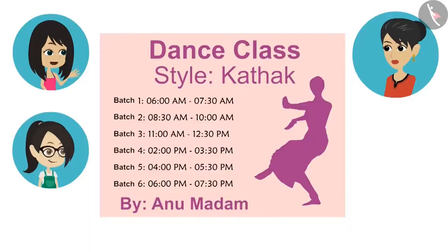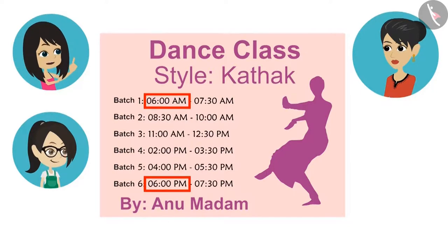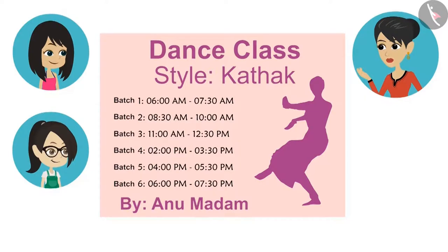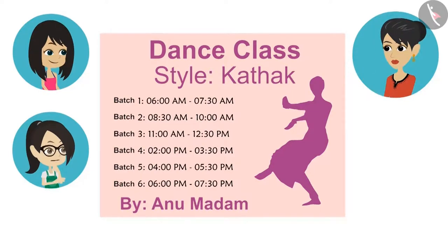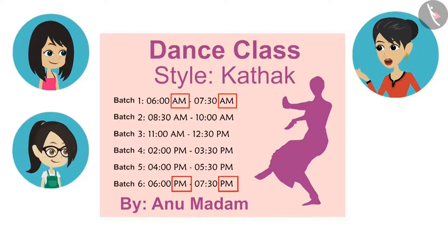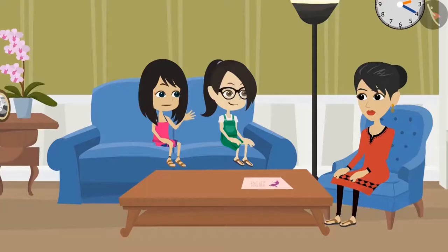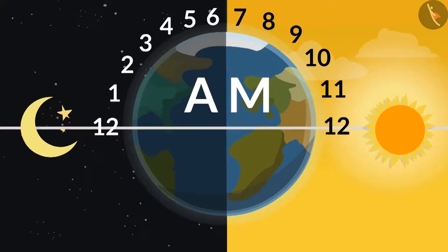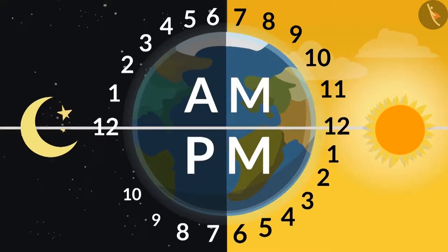So the first batch is from six o'clock to thirty minutes past seven o'clock. Then why have they written this information twice? See — the same time is written in front of batch one and in front of batch six: from six o'clock zero minutes to thirty minutes past seven. No, these two are different timings — batch one is in the morning and batch six is in the evening. How do you know, mummy? Because they have written it — look, in front of batch one the time is written as AM, whereas PM is written in front of batch six. AM is from twelve o'clock at night to twelve o'clock noon, and PM is from twelve o'clock noon to twelve o'clock at night.